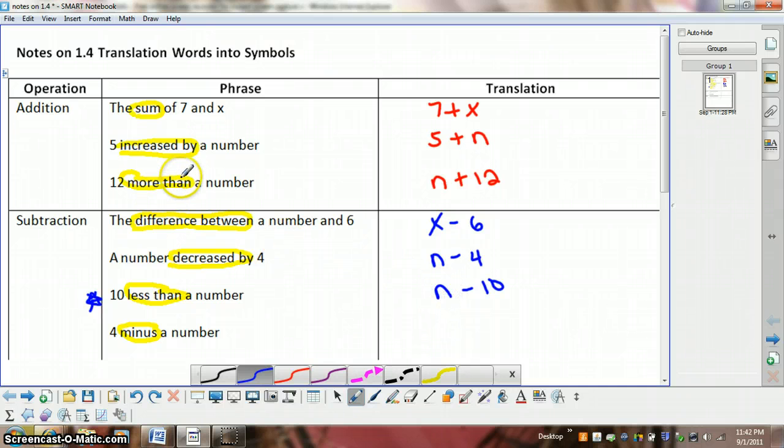Just like more than meant the 12 is added to the number, less than means 10 is subtracted from the number. And then 4 minus a number would just be 4 minus x.